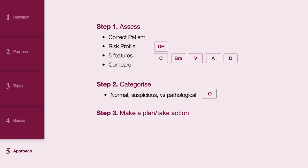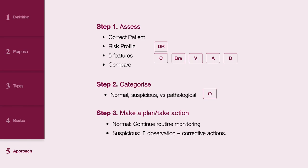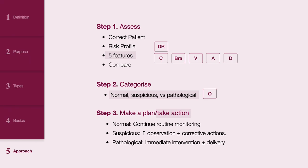Step 3: Make a plan based on your overall impression. A normal CTG necessitates no intervention but continuing routine monitoring. A suspicious CTG requires increased observation and may involve corrective actions. A pathological CTG requires immediate intervention, which may include delivery. CTG interpretation is a critical skill for ensuring the safety of both mother and baby. By systematically assessing the five features, categorizing the trace accurately, and acting promptly, healthcare providers can make informed decisions that optimize outcomes. Always follow your local and international guidelines for best practices on CTG use and interpretation.